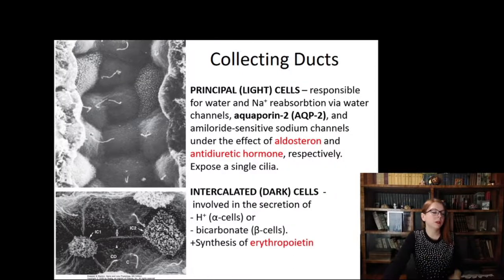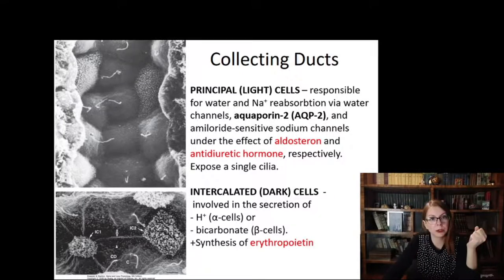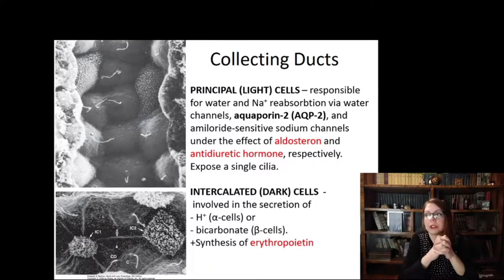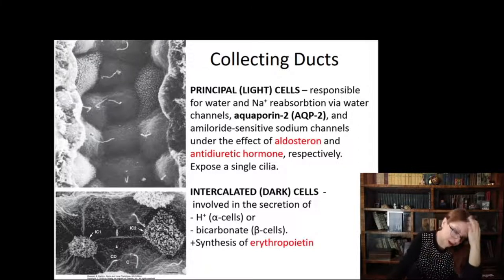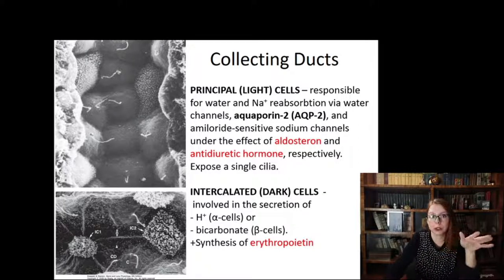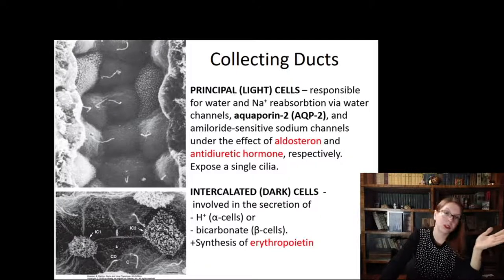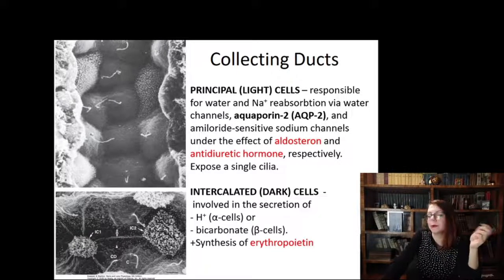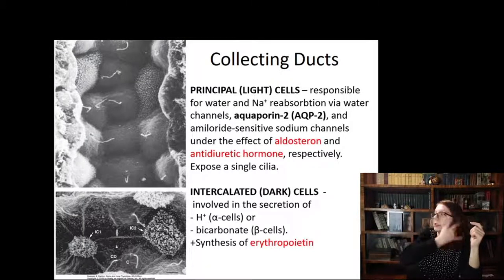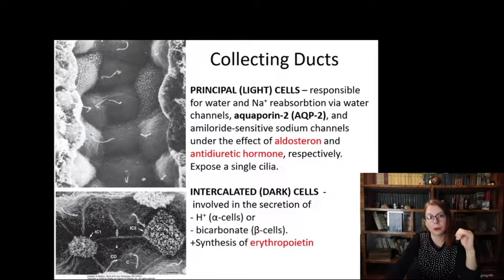Regarding erythropoietin production: kidneys produce erythropoietin, which stimulates red blood cell formation. According to recently published data, under normal circumstances the site of erythropoietin production is the collecting duct — specifically the intercalated cells — though some scientists find its messenger RNA also in the interstitial cells of the kidney. In any case, remember that kidneys are a major site of erythropoietin synthesis, so patients with chronic kidney inflammation or disease suffer from decreased hemoglobin.